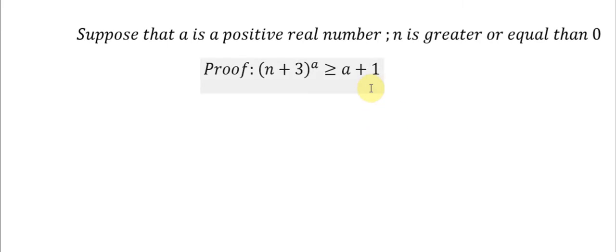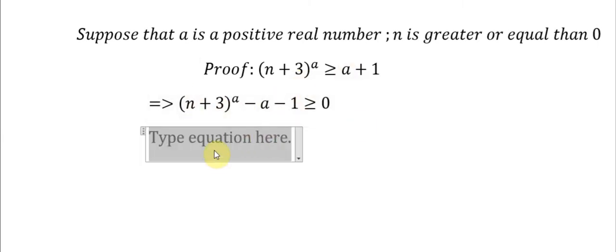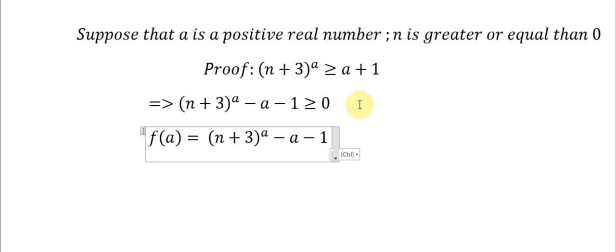In the first one, we move a and number 1 on the left. So we put this one as a function. Now we need to prove that the function on the left is greater or equal than 0.